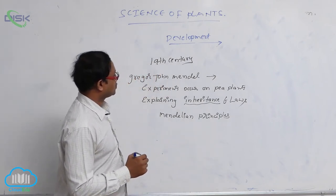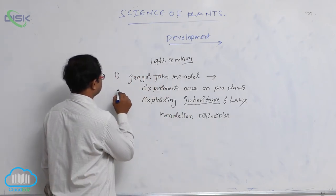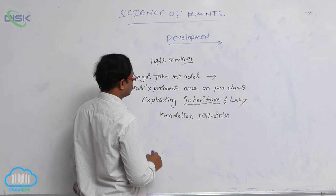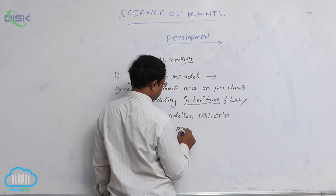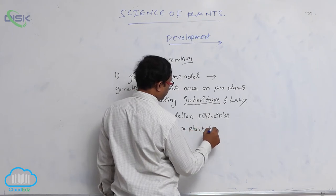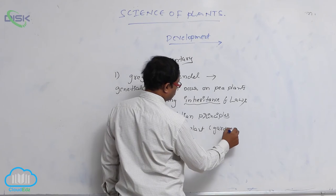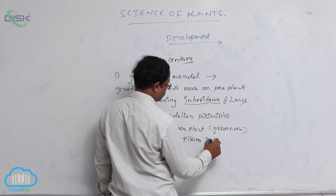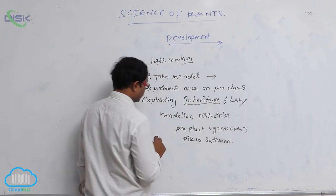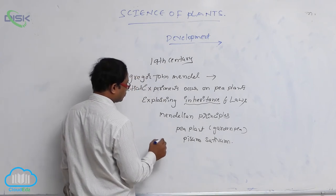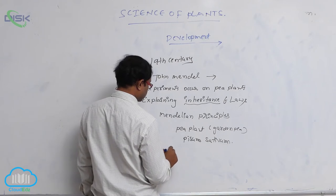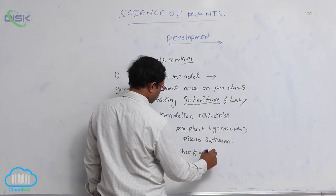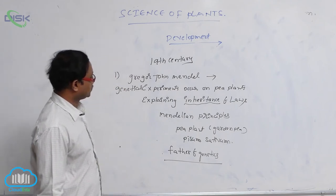Genetical experiments occurred on pea plants — garden pea, scientific name Pisum sativum, belonging to the Fabaceae family. That's why Mendel is considered the father of genetics, in the 19th century.